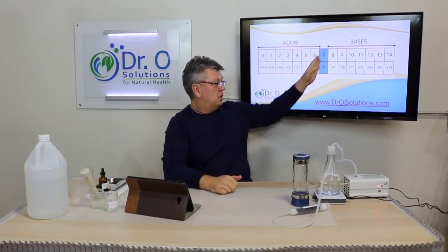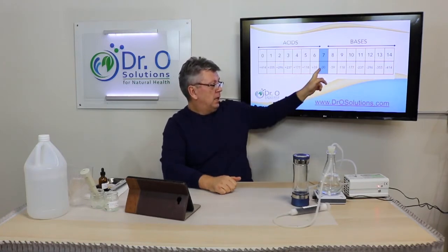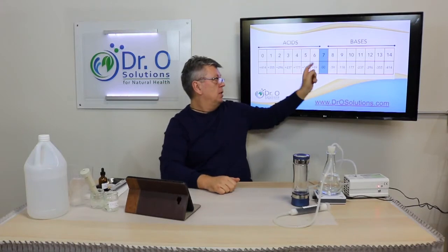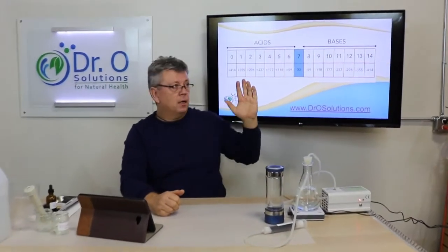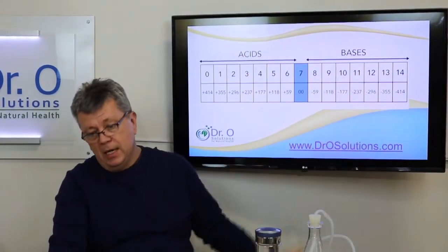Let's see how ORP relates to the pH scale — the pH scale you were taught at school. As we can see, pH 7 is neutral and corresponds to ORP 0. The base side corresponds to negative ORP, and the acid side corresponds to positive ORP. That's how oxidative reduction potential references to the pH scale.